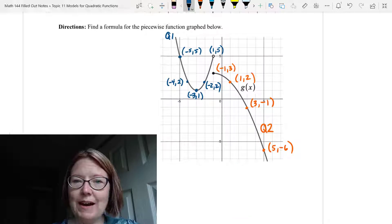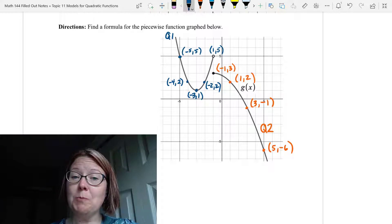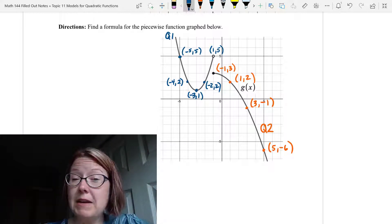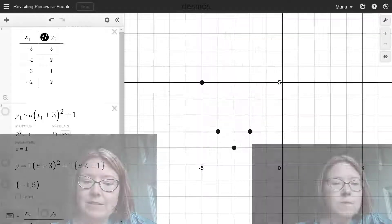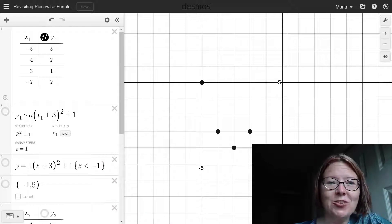Alright, we're back. Hopefully you remembered that if you want to find a formula for a piecewise function, you should treat each piece separately. One thing we can do is make a table of values for the points we know and then find a regression equation for the parabola. Let's put those points over into a table in Desmos.